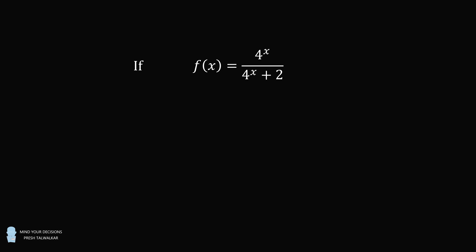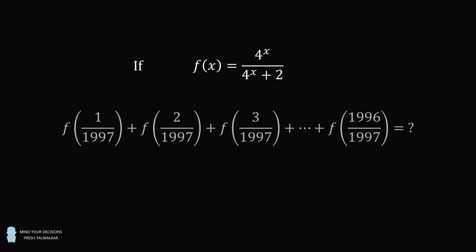Problem 1. If f is equal to 4 to the power of x divided by 4 to the x plus 2, then what is the value of f of 1 over 1997, plus f of 2 over 1997, plus f of 3 over 1997, and so on until the final term f of 1996 divided by 1997.